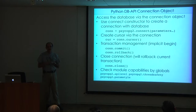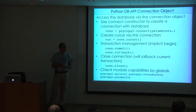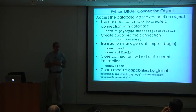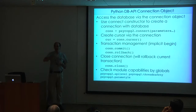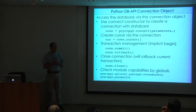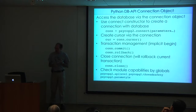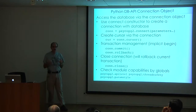SQLAlchemy has a nice URI method of writing all the connection details in a cross-database way, and it would probably be nice if DB-API version 3 came up with something like that. You create this connection to your database, and to actually manipulate anything on the database you have to create a cursor.